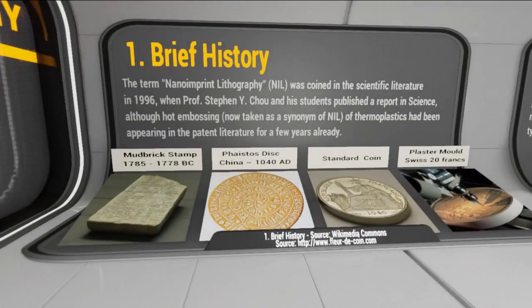The imprint is an ancient technique used for the reproduction of seals, stamps, writings, and coins. We can see a small brief stamp of Mesopotamia, the ceramic movable type of China, and standard patterns and molds for making coins. The term nano-imprint lithography, NIL, was coined in the scientific literature in 1996 when Professor Stephen Chou and his students produced a report in Science. Although hot embossing, now taken as a synonym of NIL, of thermoplastic has been appearing in the patent literature for a few years already.